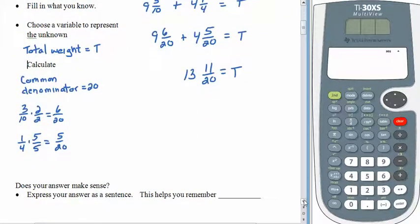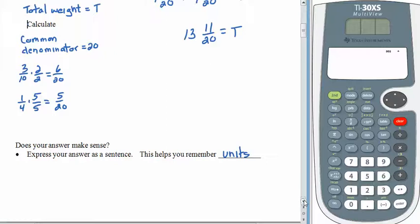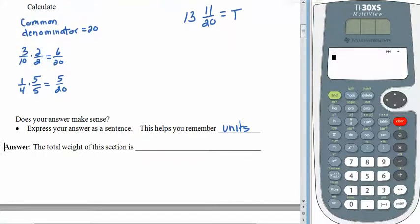The first thing is to determine whether or not the answer makes sense. We started off with nine pounds and a little bit, then four more pounds and a little bit, and ended up with thirteen pounds plus some stuff — that's reasonable. So our answer is in the right ballpark. Express your answer as a sentence, because sentences help you remember the units. The total weight of this section is thirteen and eleven twentieths pounds.